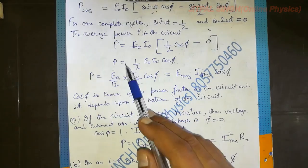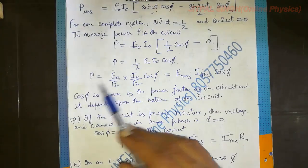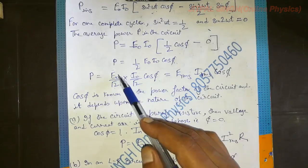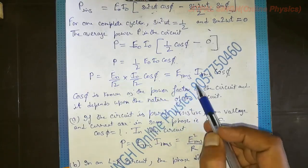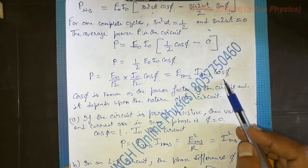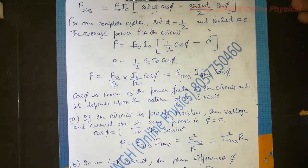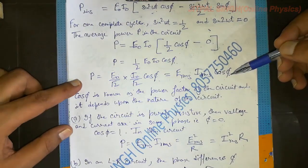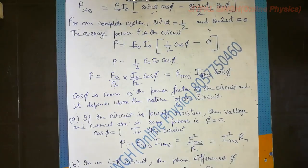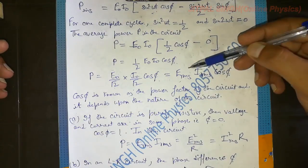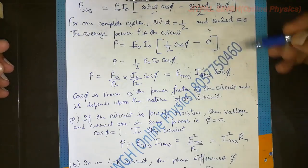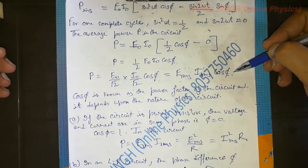Writing ½ as (1/√2)(1/√2), we get P = (E₀/√2)(I₀/√2)cos φ. Now E₀/√2 is E_rms and I₀/√2 is I_rms, so P = E_rms · I_rms · cos φ. In general, power is voltage into current for DC, but for an AC circuit it is E_rms × I_rms × cos φ, depending on the RMS values of voltage and current and the phase difference φ.